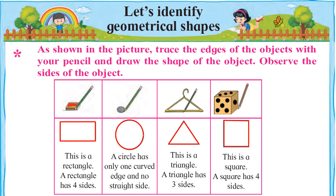To chaliye activity number one karke dekhte hain. Is activity mein aapko paper ki boat banaani hai, aur boat banane ke baad use unfold yaani kholna hai. Unfold karne par aapko is tarah ka paper nazar aayega. Isme aapko triangles aur four-sided figures count karni hain, aur count karne ke baad two triangles aur two four-sided figures ko color karna hai. Yeh activity aapko khud se karke dekhni hai.